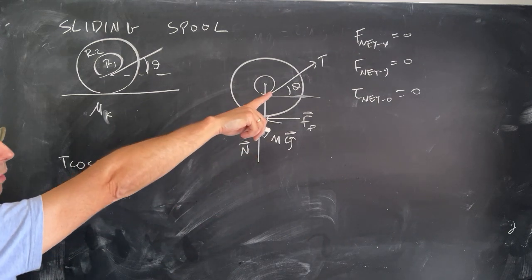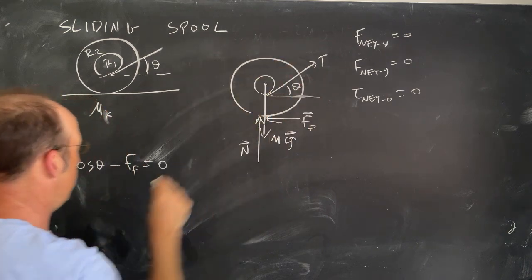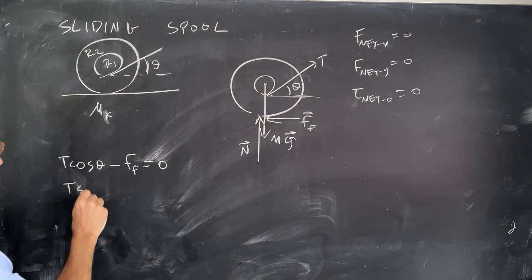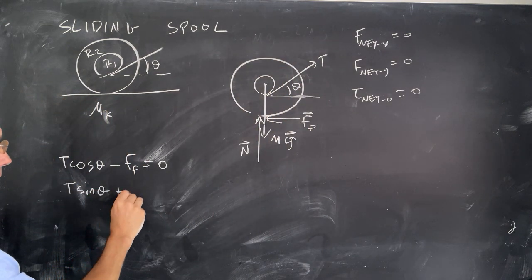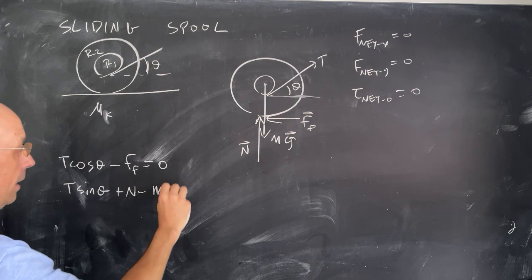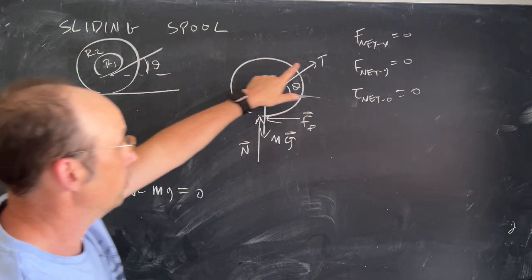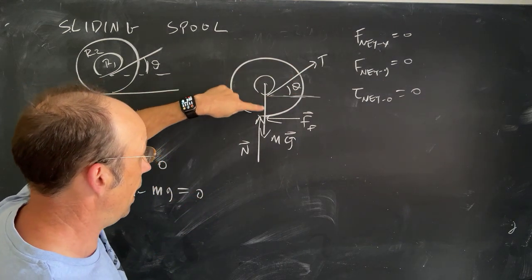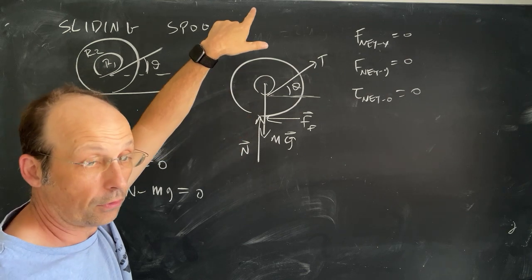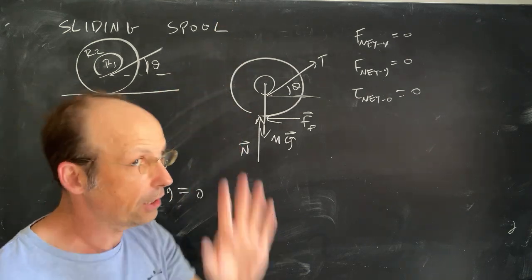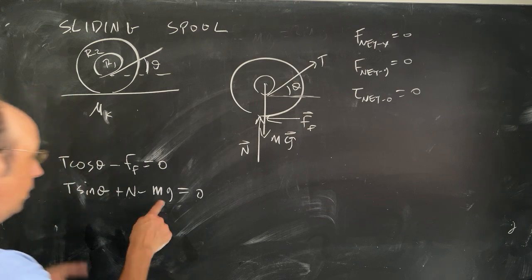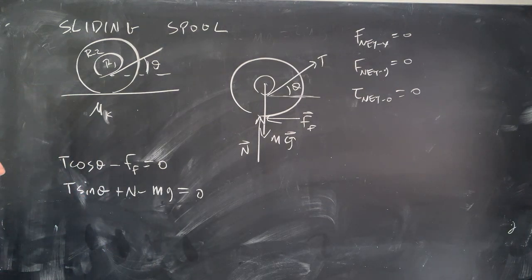Next, let's do the y equation. Here, I have a component of the tension, T sine theta plus N minus mg equals 0. So I have a component of the tension. I have the downward gravitational force. I have the upward normal force. And here's one of those things where the normal force is clearly not equal to the weight, right? Because they have this T sine theta term in there.